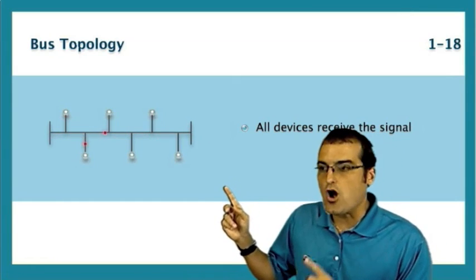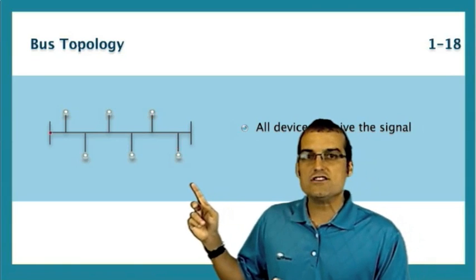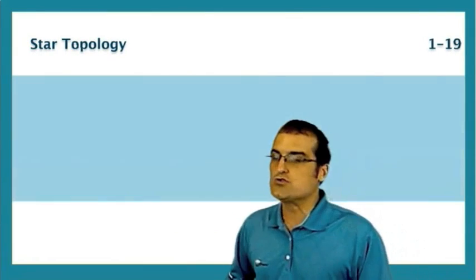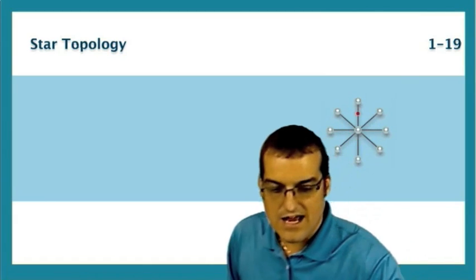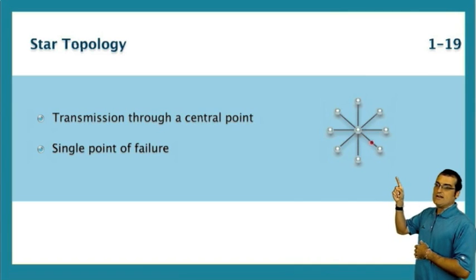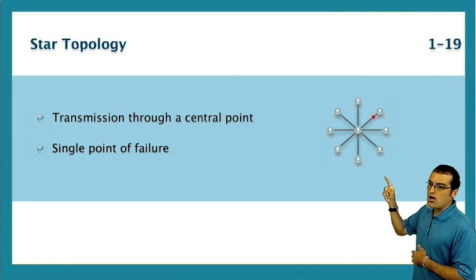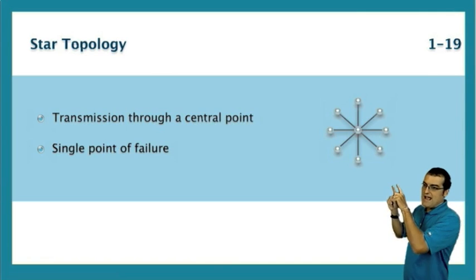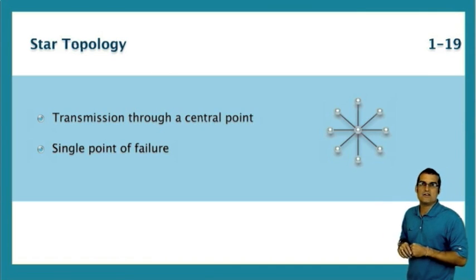I want you to draw this on a flashcard so if Cisco shows it to you, you'll recognize it. Just like I want you to draw out this star topology. In the star topology, you've got a central point with everybody connecting to that central point.